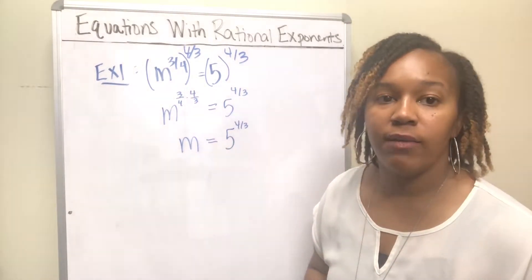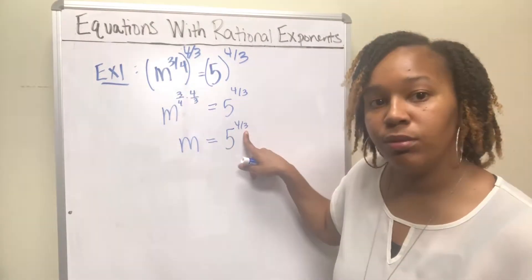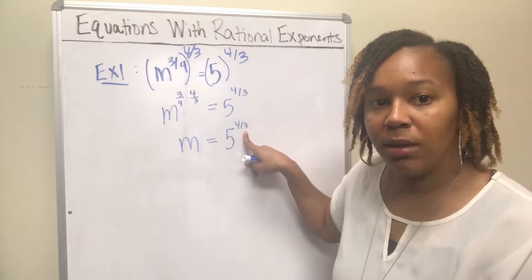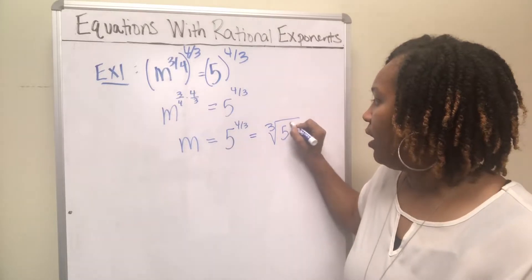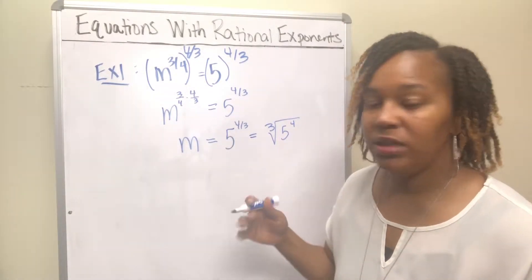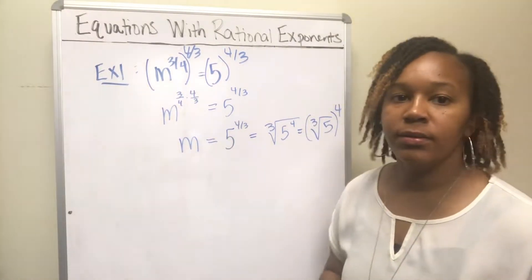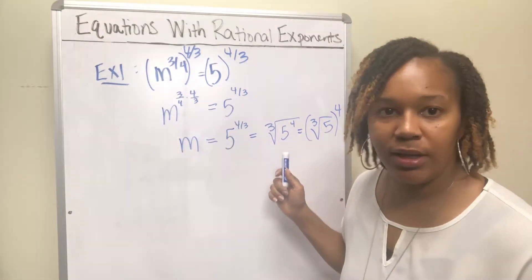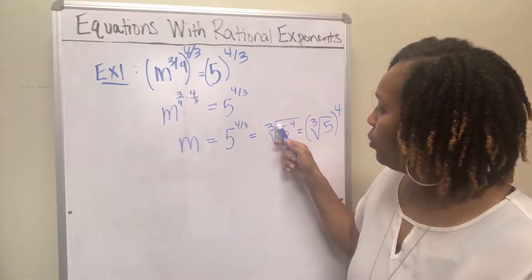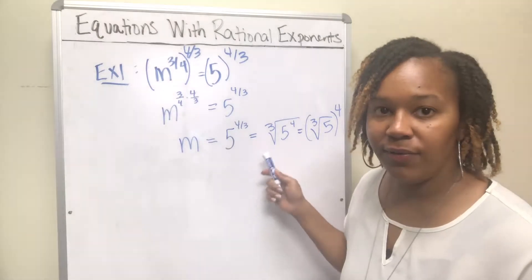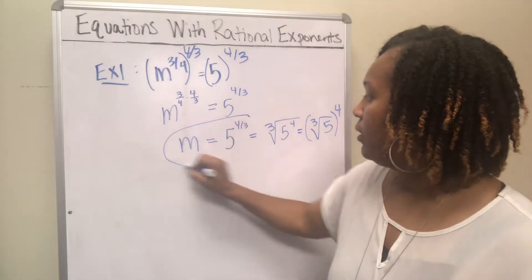Whenever you have an exponent that's a fraction, it can be rewritten with the number in the denominator being the root. The 3 is in the denominator, so that means this is the 3rd root. So this can also be written as the 3rd root of 5 to the 4th. We don't know what the 3rd root of 5 is — it's not an integer — so we leave it like this. Any one of these forms is a sufficient final answer, but you want to break it down to check if it can be simplified further.